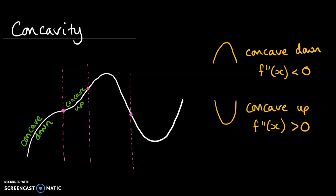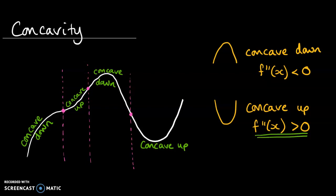Following the same logic for the next section, it turns back around again — concave down. Then in the final section, it stops going into steep negative, gets shallower and shallower negative, and then goes back into a positive gradient — so this is concave up. We can use the second derivative to figure out which section of the graph we're in: second derivative less than zero means concave down, greater than zero means concave up.